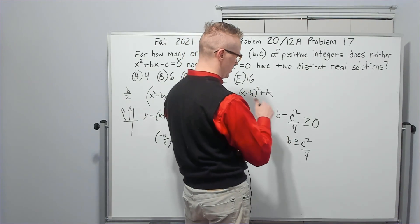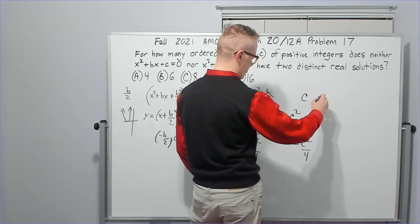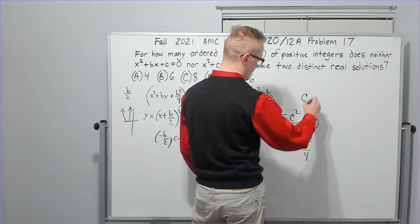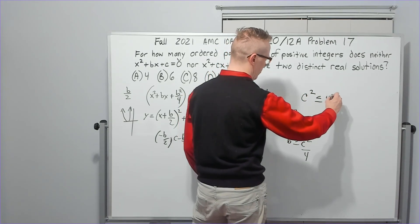So if I square both sides, c squared. What did it say about ordered pairs of positive integers? So we don't have to worry about negative stuff going on anyway.